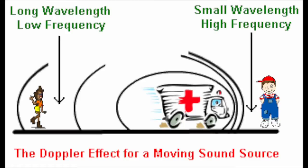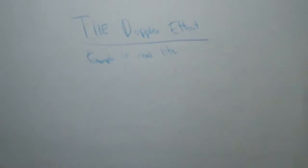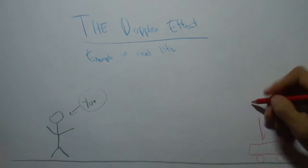The Doppler effect is an increase or decrease in the frequency of sound, light, or other waves as the source and the observer move towards or away from each other.